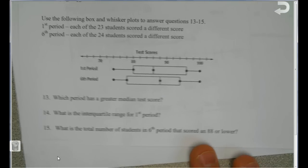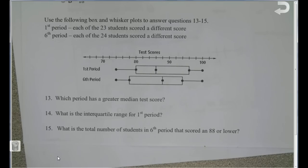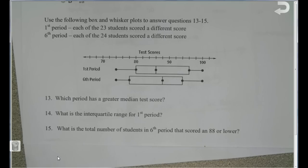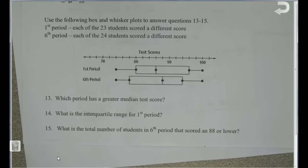When answering questions 13, 14, and 15, you are comparing two box and whisker plots. Take your time, read the questions carefully, and think about what we're comparing — what does it mean to have a certain median, and how many students fit into what we're trying to measure? Remember that the median splits data into 50% and 50%. Do your best, and I'll check it when you're done and we'll go over the answers together.